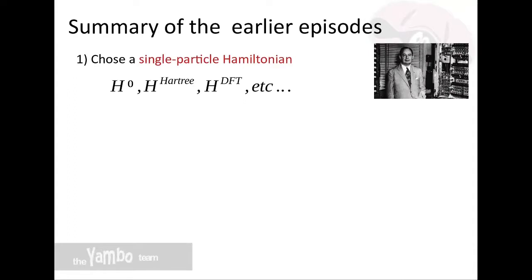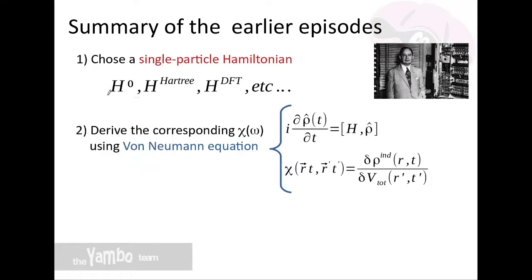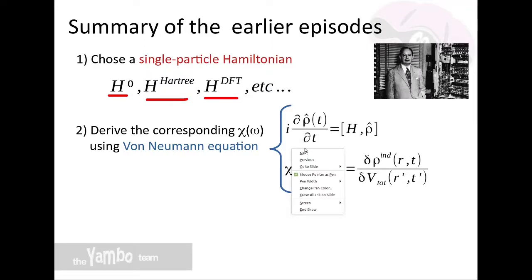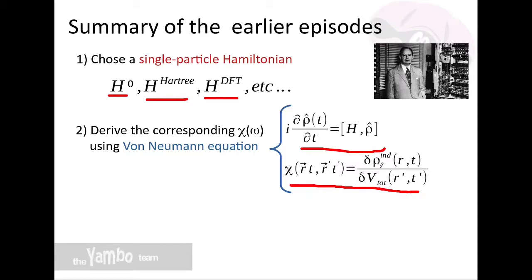First, a summary of the earlier episode in this lecture series. In the lecture on linear response, we saw that we get a different response function depending on the Hamiltonian we choose to describe our system. We can start with a Hamiltonian completely independent of the density, or use a Hartree Hamiltonian to get RPA, or use DFT to get the TDDFT response function. We derived these using the von Neumann equation, and the response function is always the derivative of the induced density with respect to the total field.